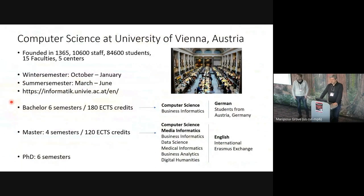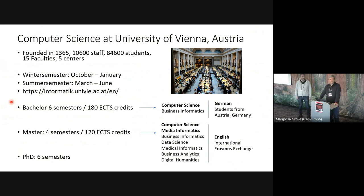The University of Vienna is fairly old — it was founded in the 14th century. It has roughly 10,000 staff and 84,000 students. Our academic year is split into two semesters, each lasting four months. That is the time we have for a lecture to convey all the information — in our case, teaching Vulkan or other topics.